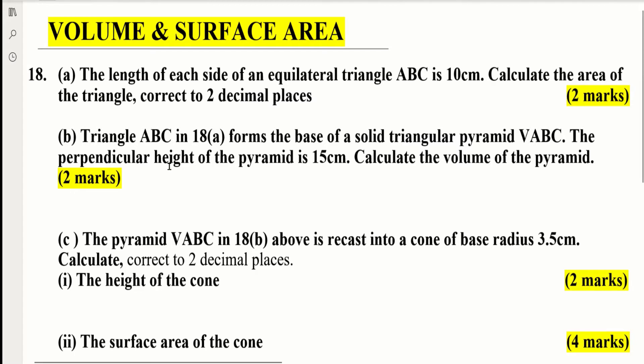Triangle ABC in 18A forms the base of a solid triangular pyramid VABC. The perpendicular height of the pyramid is 15 cm. Calculate the volume of the pyramid. Two marks.